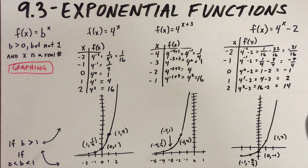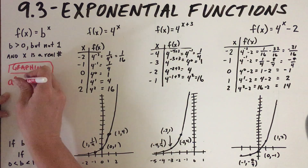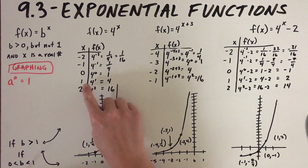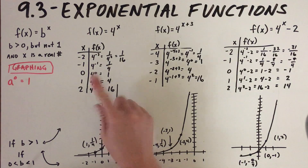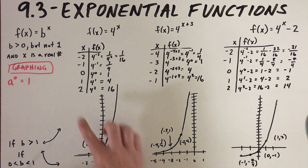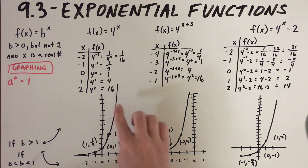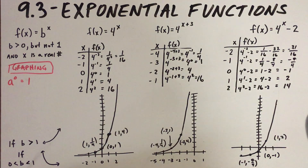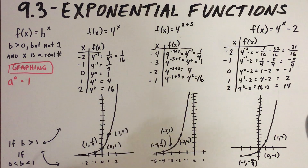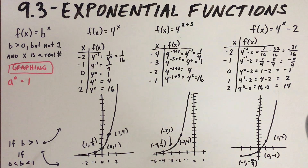Remember, anything to the zero power is 1. When we plug in 1 we get 4 to the first power, which is 4, giving us the point (1, 4). When we plug in 2 we get the point (2, 16), which is all the way up here on the graph. You can see this grows exponentially — it's not linear.